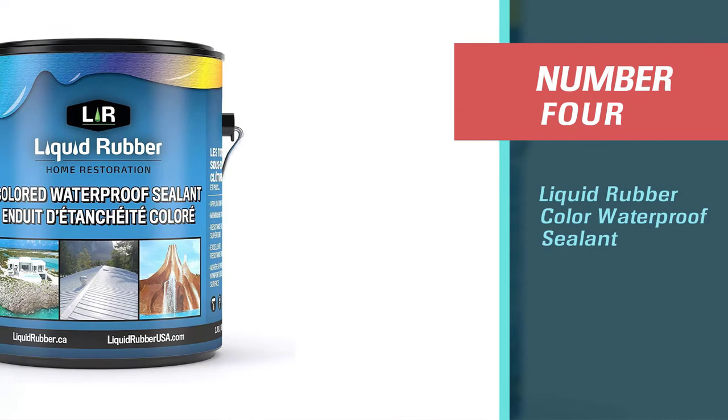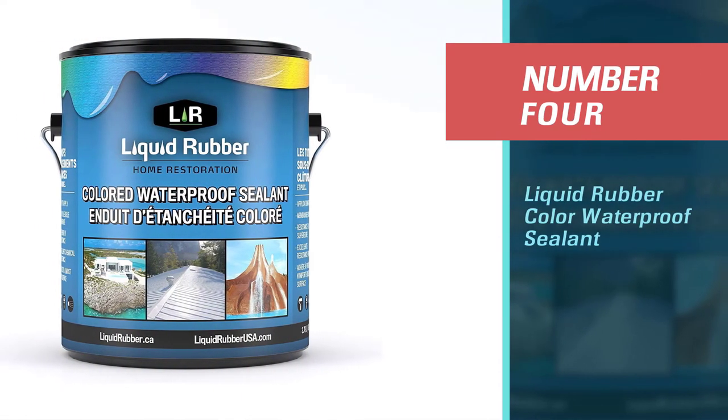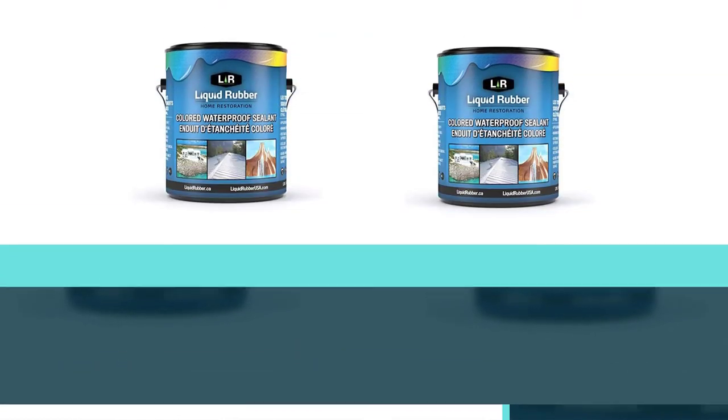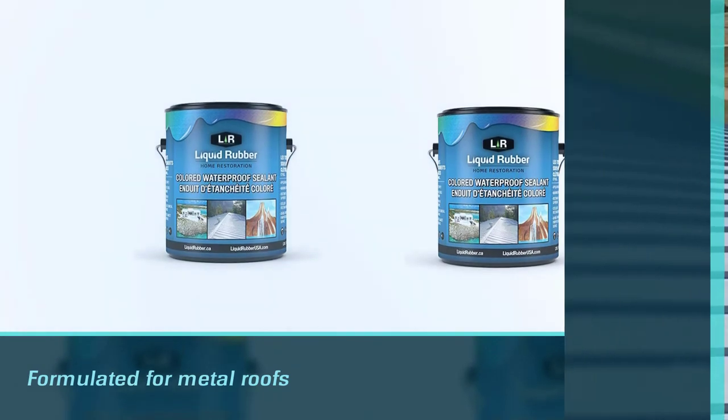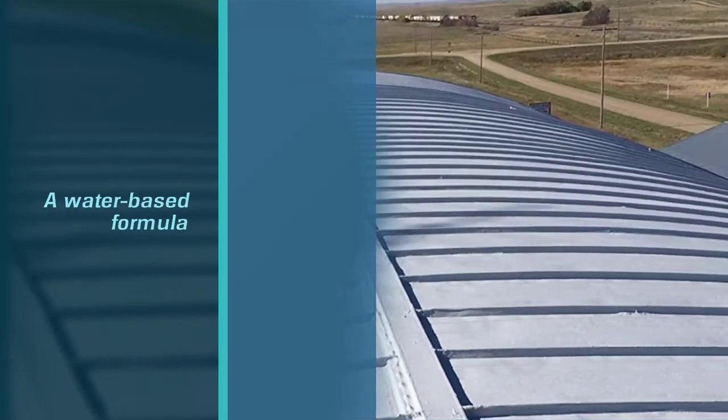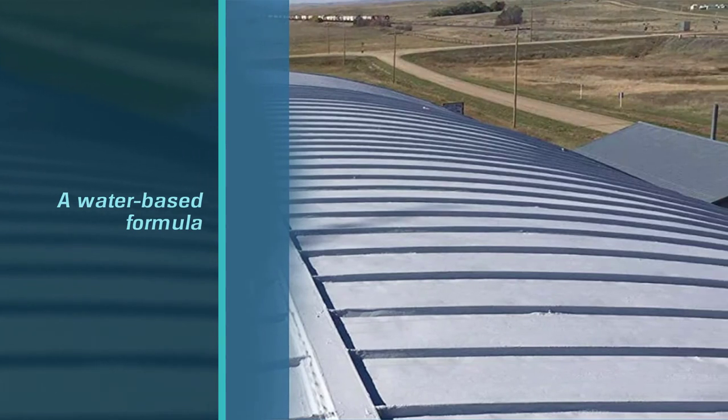Number four: Liquid Rubber Color Waterproof Sealant. For a roof sealant that's specifically formulated for metal roofs, this option from Liquid Rubber is hard to beat. A water-based formula that can be applied with a brush, a roller, or a sprayer, it dries into a thick rubber membrane that's incredibly moisture and UV resistant.